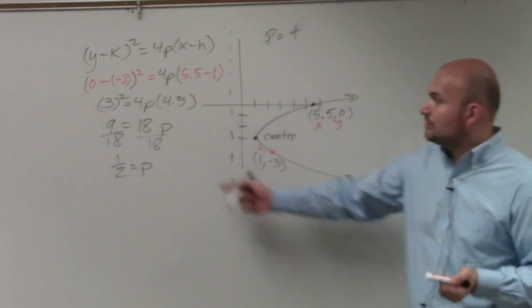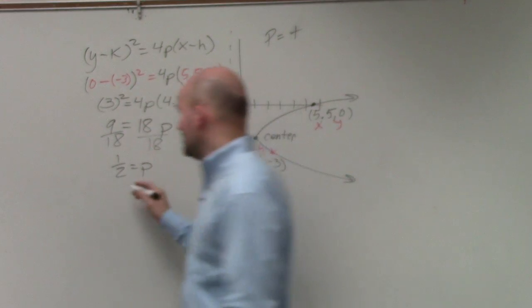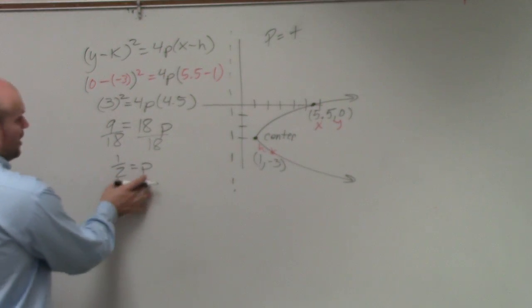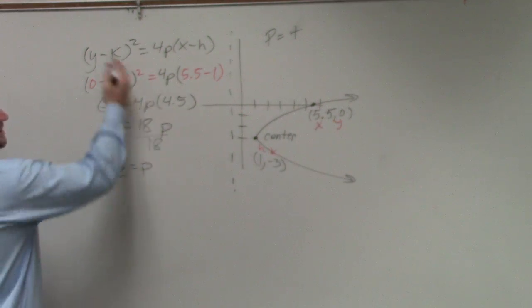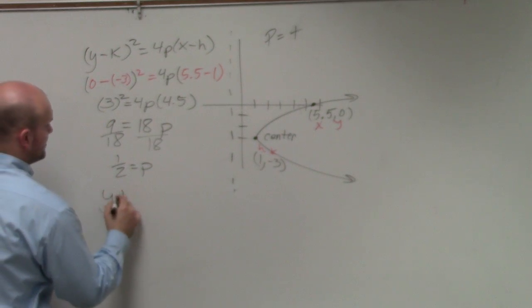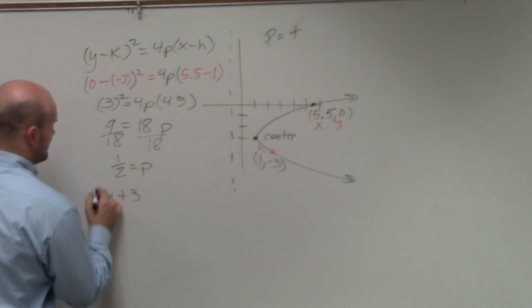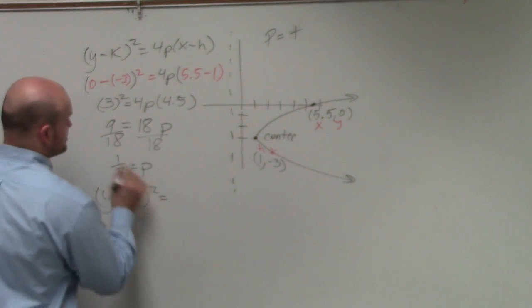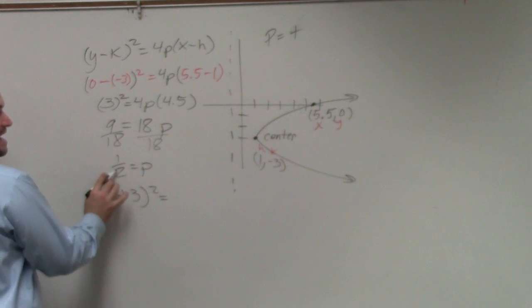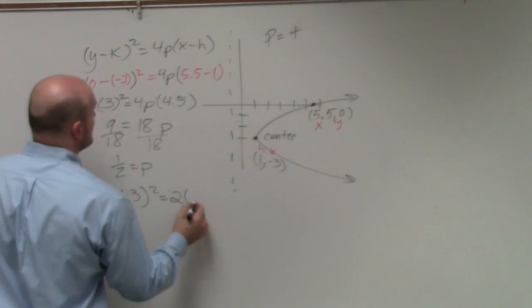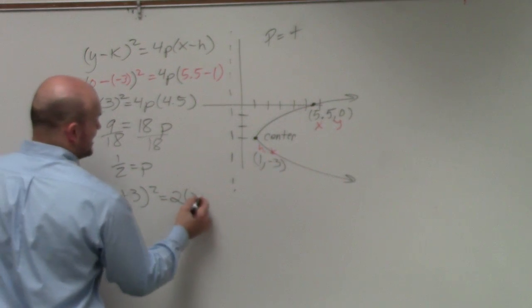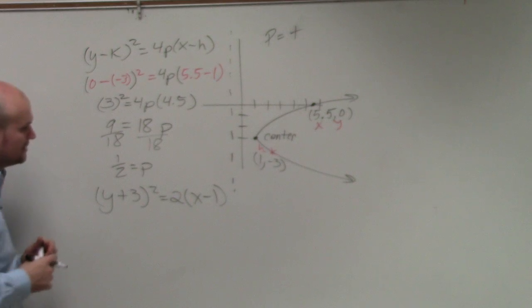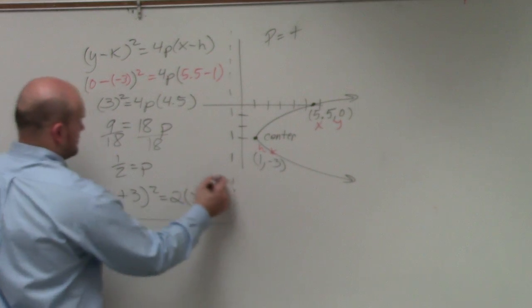So now I know what p is, so I can write the rest of the equation. When we're writing the equation, all we need to know is p, h, and k. So it's (y plus 3) squared equals 4 times one half, which is 2, times (x minus 1). And that's your final answer.